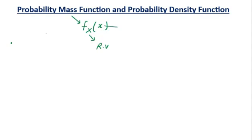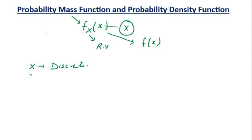Small x is the value that the random variable capital X can take, and the same notation is used for the probability density function. In some books, f_X(x) can also be written simply as f(x). When x is a discrete random variable, f(x) is a probability mass function. When x is a continuous random variable, f(x) is a probability density function.